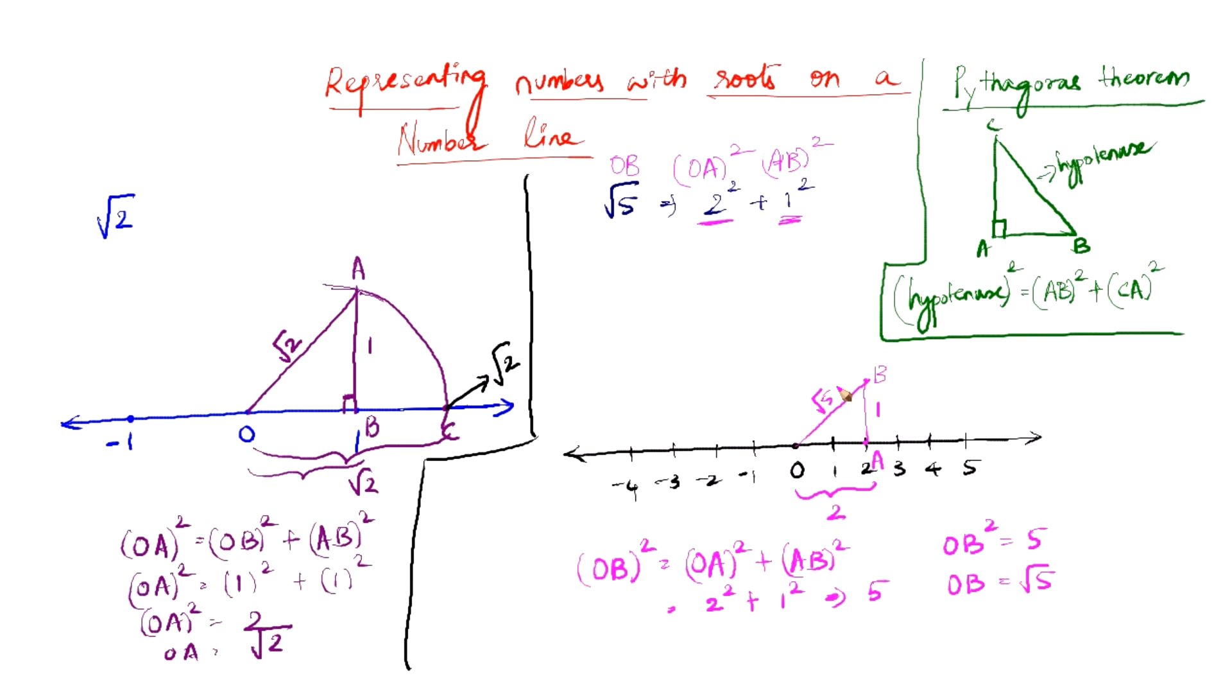So all we need to do to locate root 5 on the number line is to consider OB as the radius of a circle and draw a circle such that it touches the number line. So here is a circle. Let us name this point as C, and OC is also the radius of the circle and it has to be root 5. Therefore this point here represents root 5 on the number line. So this is how we represent numbers with roots or irrational numbers on the number line.